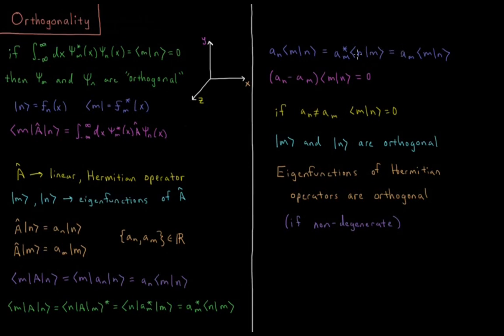which we know that a_m has to be real. The eigenvalues of Hermitian operators have to be real. So this is going to be a_m times the integral ⟨m|n⟩. These functions we can replace with one another. They commute with one another.